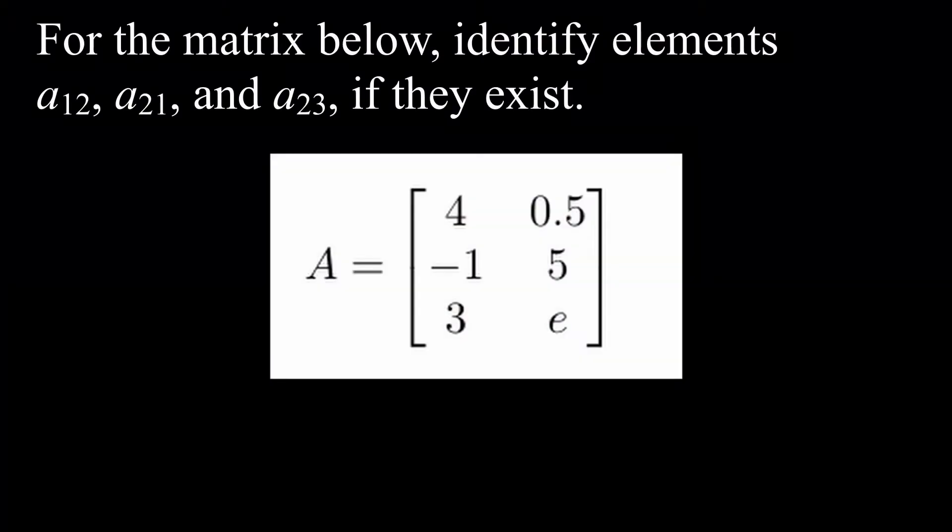For this example, we're given the matrix capital A equals [4, 0.5; -1, 5; 3, E], read in terms of its rows.